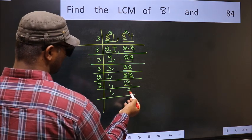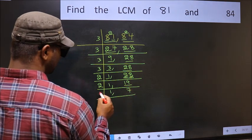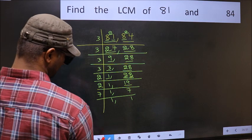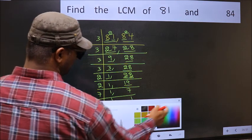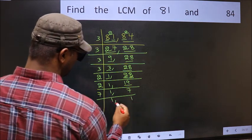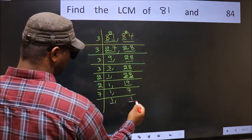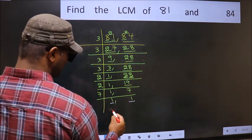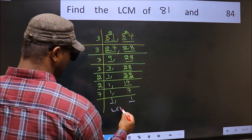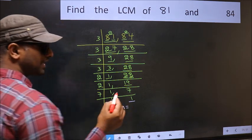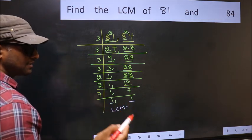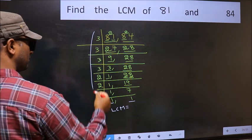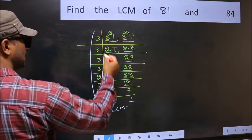Now we have 7. 7 is a prime number, so 7 ones are 7. We have now reached 1 in both places. So our LCM is the product of all these divisor numbers.